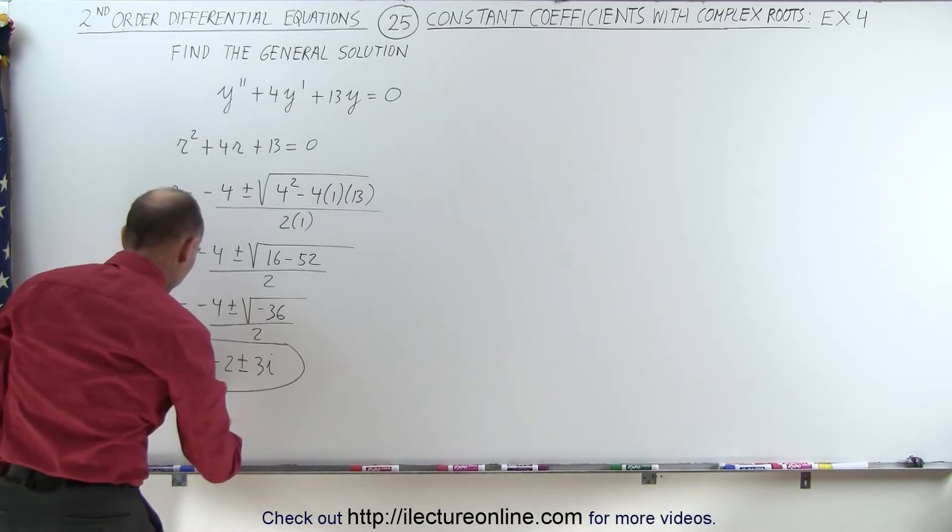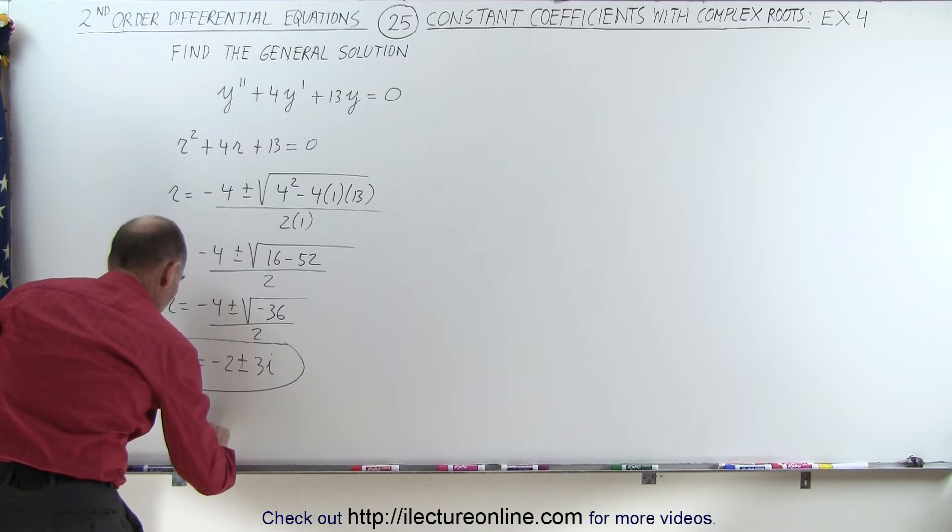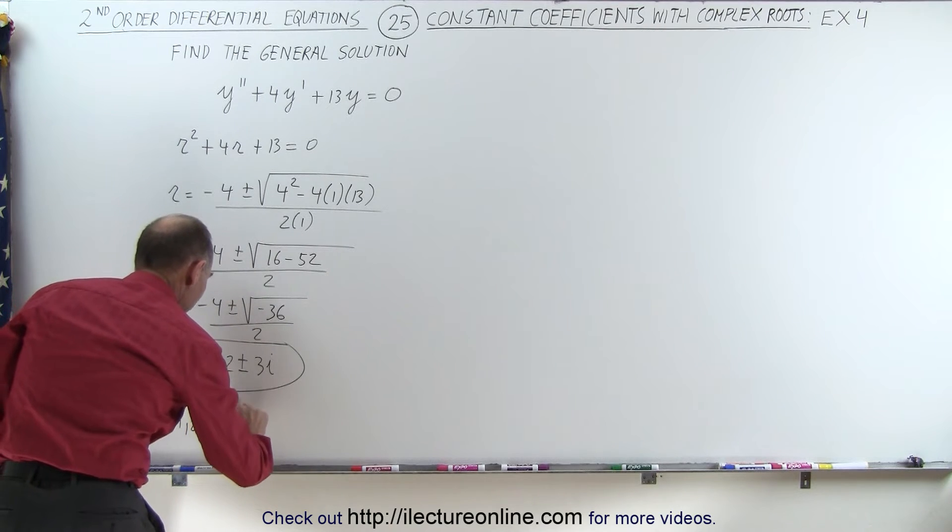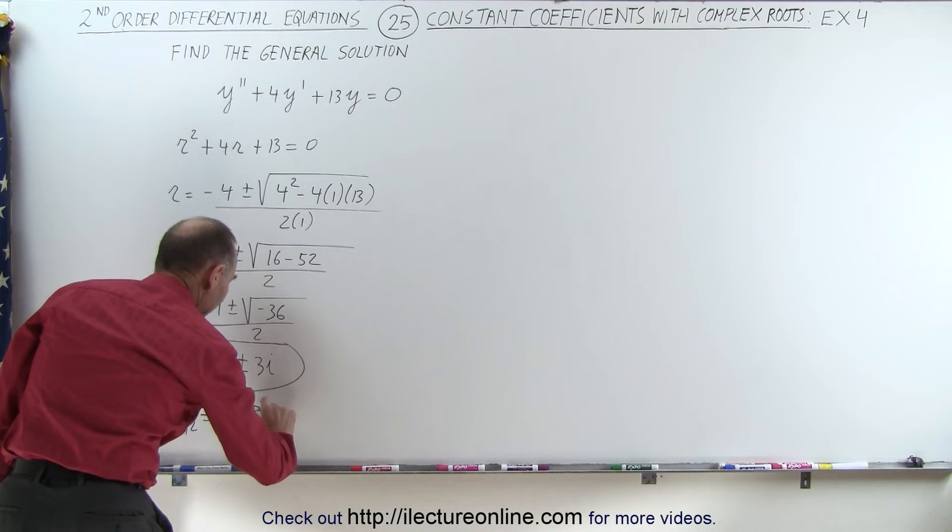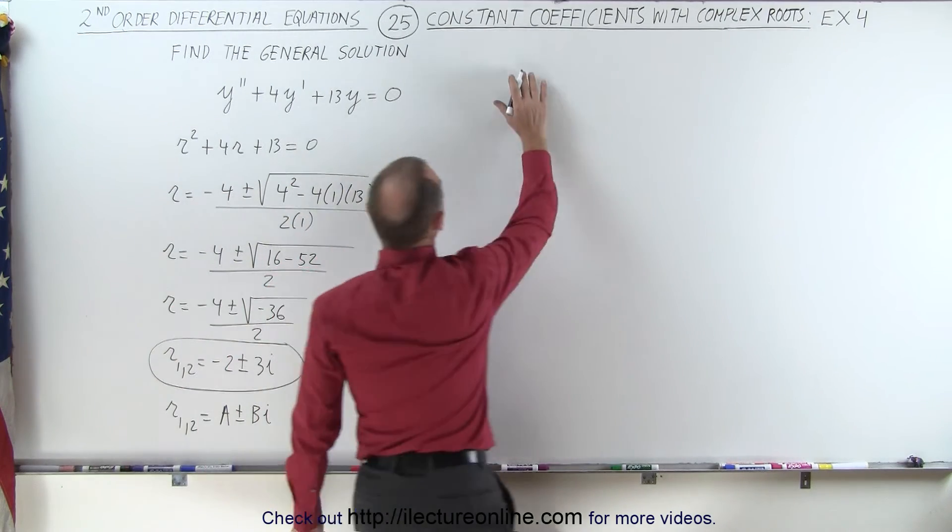Notice the general form of the roots: r1 and r2 is equal to a plus or minus bi, which lends itself to the general solution as follows.